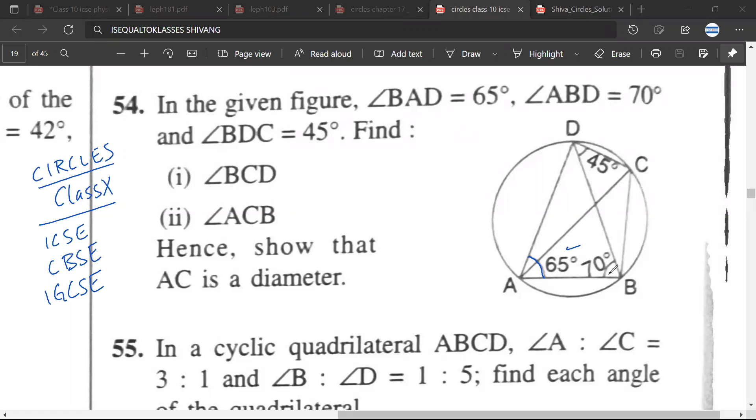Angle ABD, this angle is 70 degrees. And angle BDC, this angle is 45 degrees.